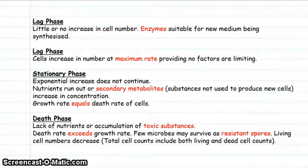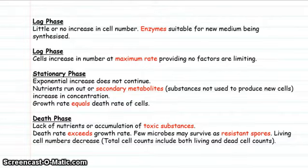Finally, we have the death phase. The nutrients run out or there is an accumulation of toxic substances, and the death rate exceeds the growth rate. Some microbes can survive this period as resistant spores, and the living cell numbers decrease.